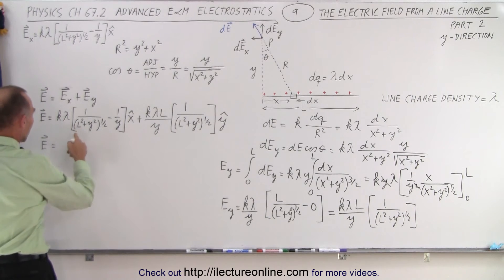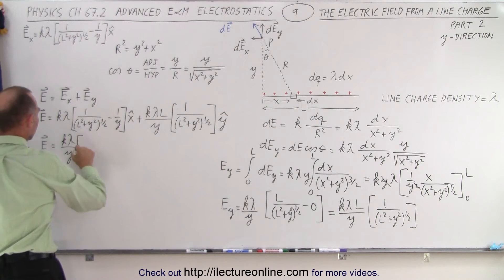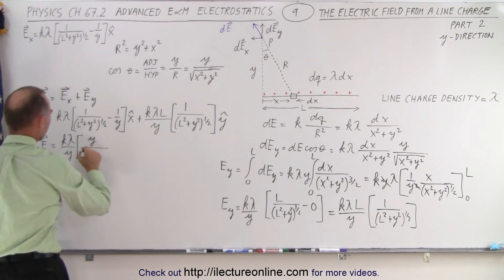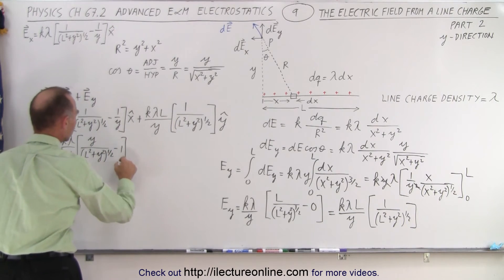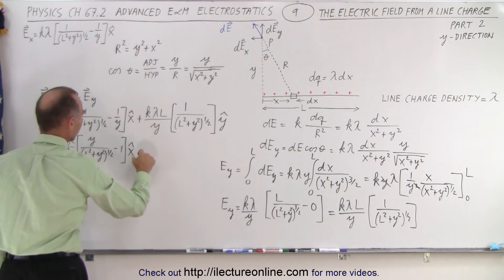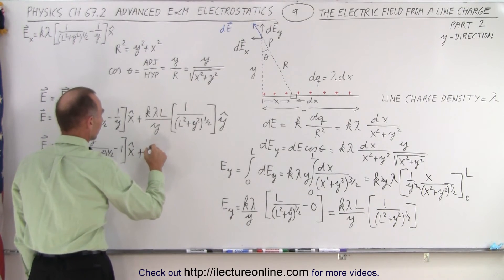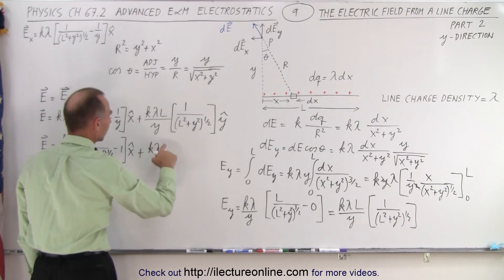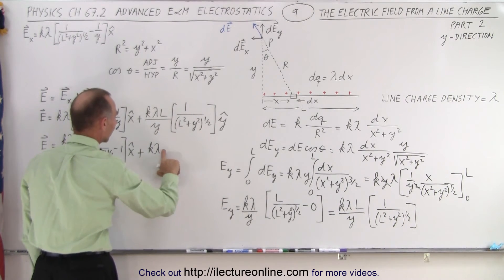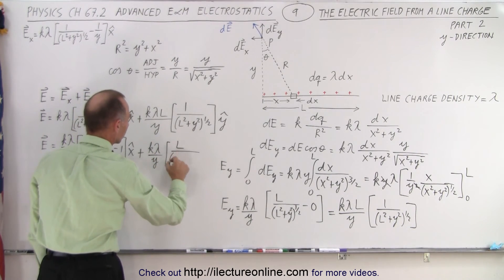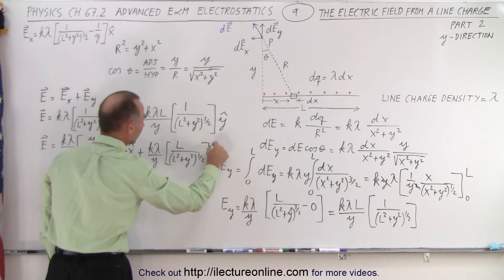And now I can pull out a y. So I can write this as k lambda over y times y over L squared plus y squared to the 1 half power minus 1 in the x direction. Plus, here we have k lambda L over y. But I can bring the L inside, divided by y times L over L squared plus y squared to the 1 half power in the y direction.